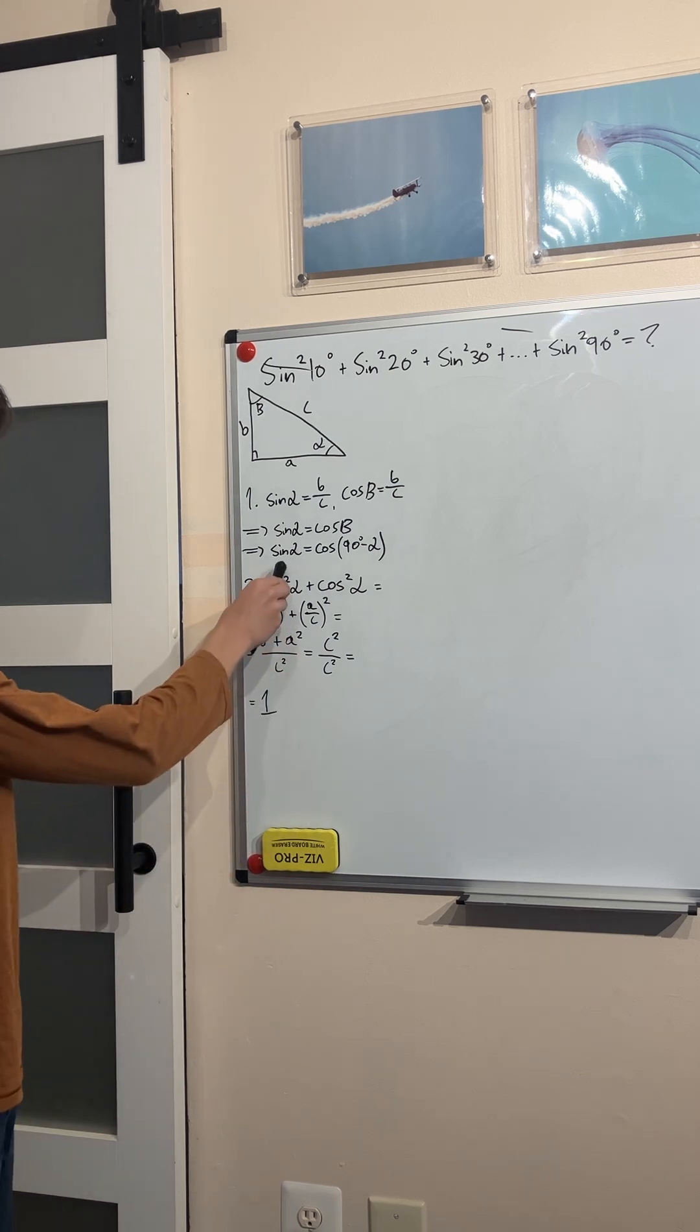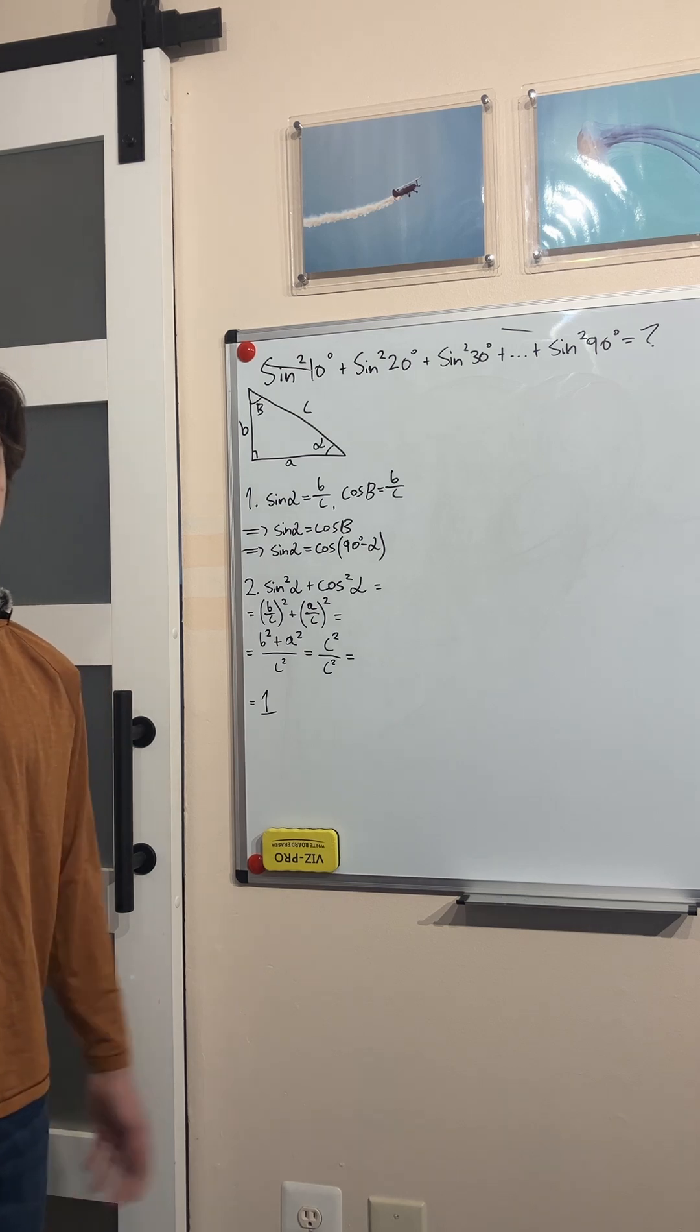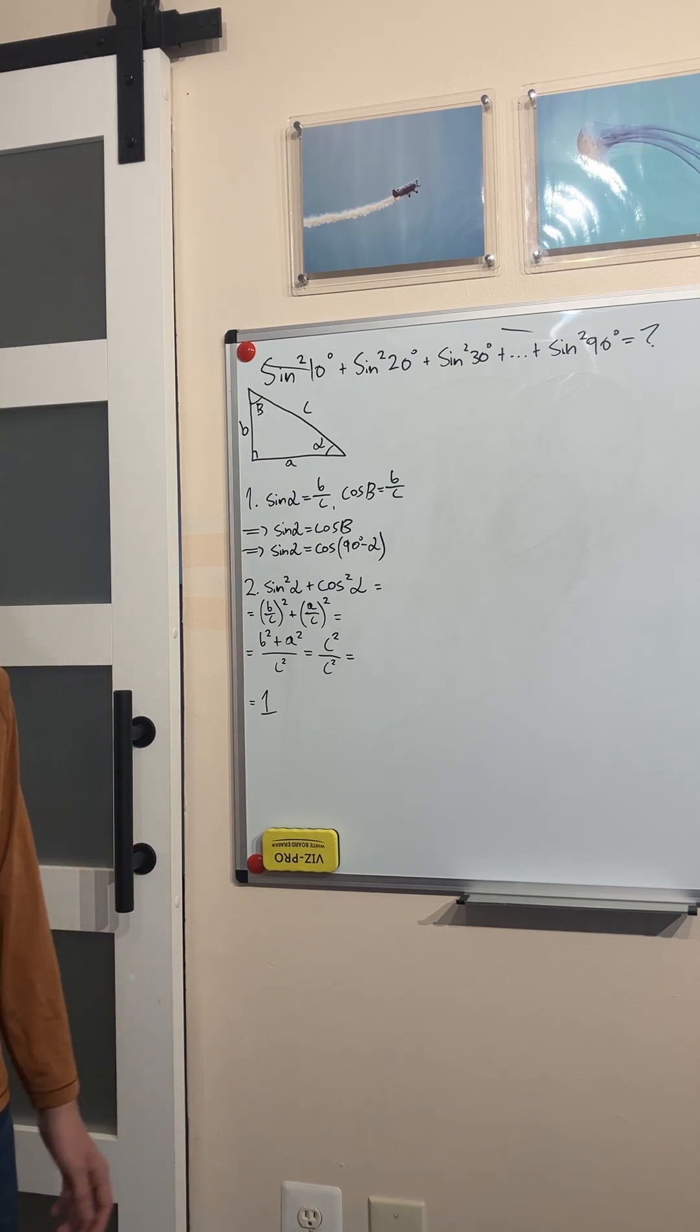That means that the sine of alpha is equal to the cosine of 90 degrees minus alpha. The sine of any angle is equal to the cosine of its complement. Very important.